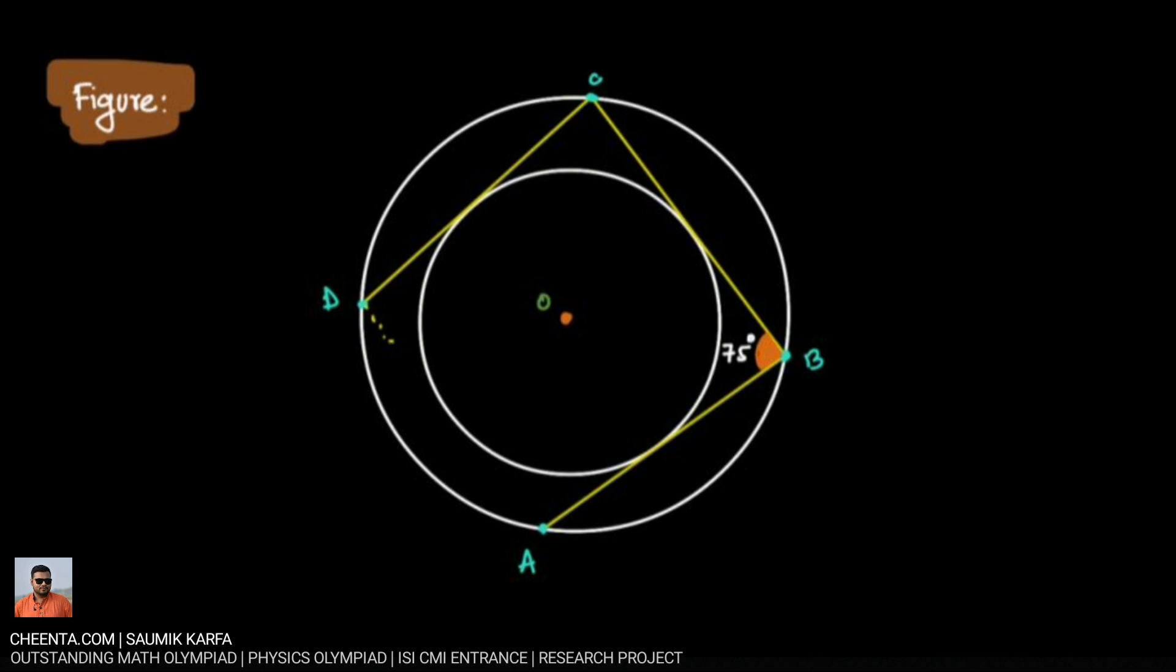So what is the minimum number of chords we can draw? Also, we are given the angle between AB and BC is 75 degrees. So let us try to understand the key idea of this problem.